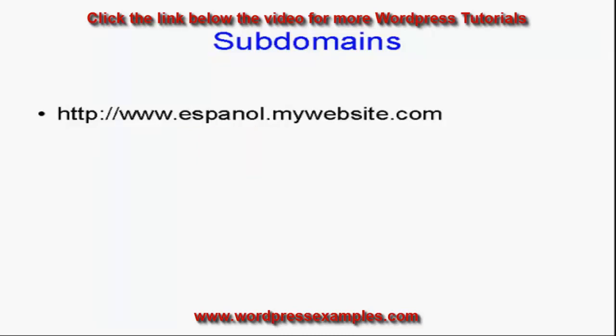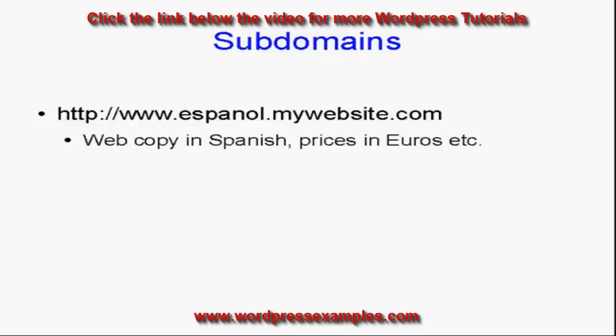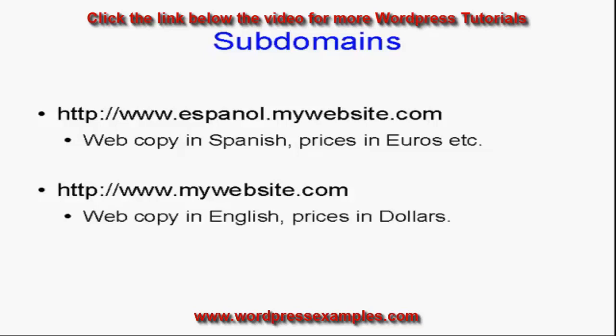For example, let's say you want to have a Spanish language version of your website. You could have a subdomain like www.espanol.mywebsite.com. Within that subdomain, you can have web copy in Spanish and prices in euros or pesos or whatever. And you would keep that completely separate from your main website, mywebsite.com, which would have the web copy in English and the prices in dollars.